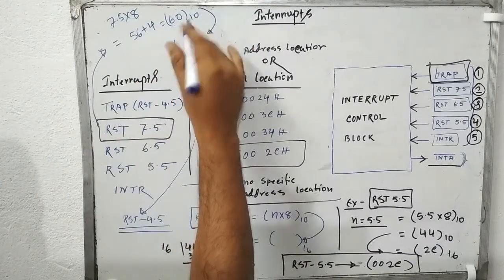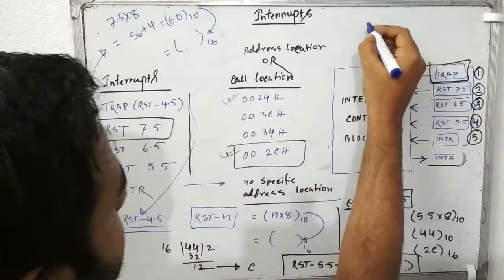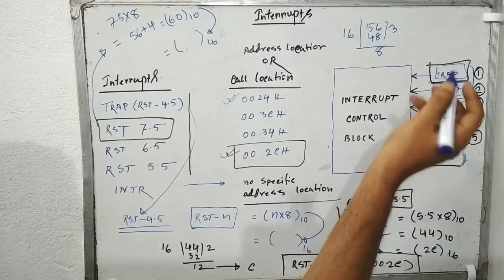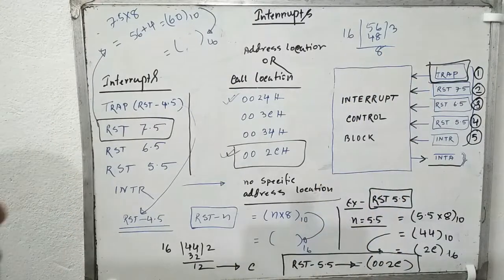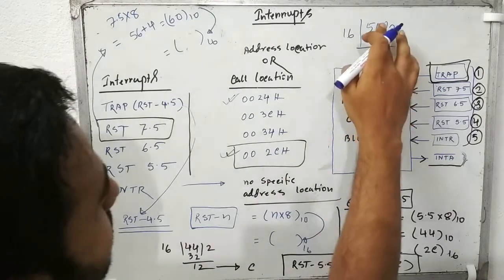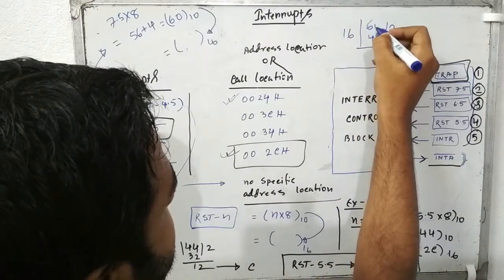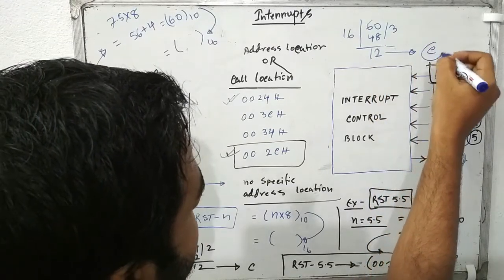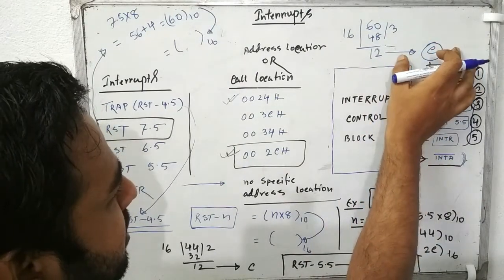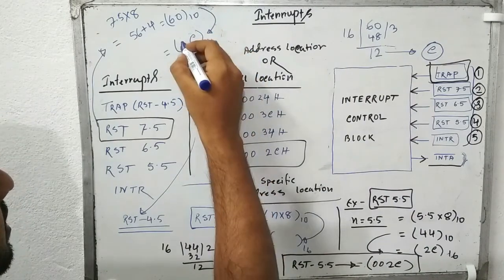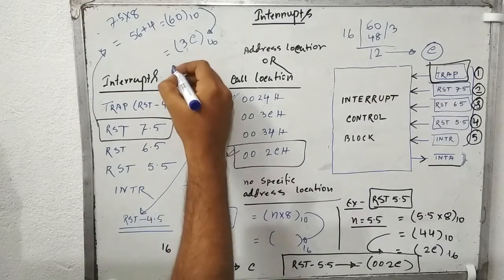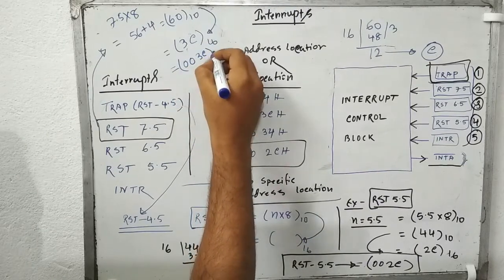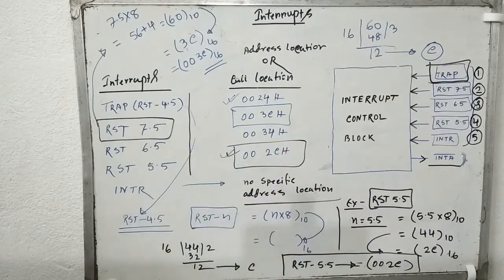Dividing 60 by 16 gives quotient 3 and remainder 12. In hexadecimal, 12 is C. The remainder goes first, so we get 3C. Since we need a 16-bit address, the upper byte is 00, giving us 003C. As you can see, RST 7.5 is also 003C — matching the chart. That is the process to calculate any software or hardware vector memory location.